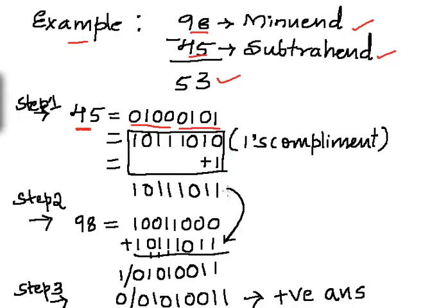The one's complement is simple — we interchange zeros to ones and ones to zeros. So 01000101 becomes 10111010. Just by changing 0 to 1 and 1 to 0. Then we add 1 to it to make the two's complement.